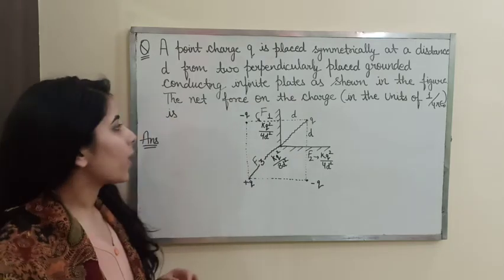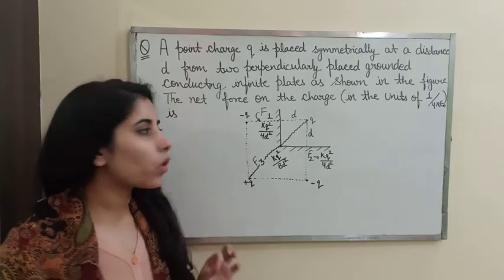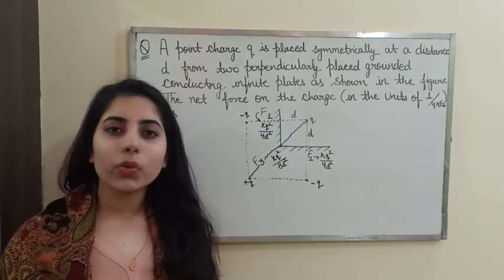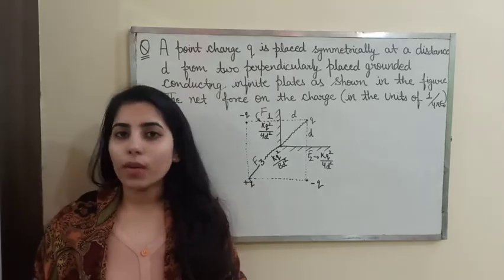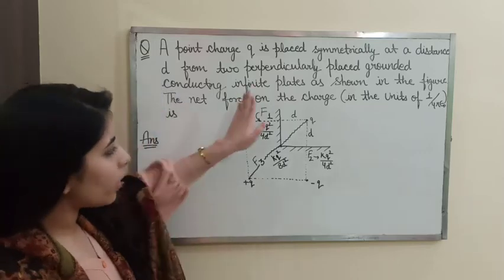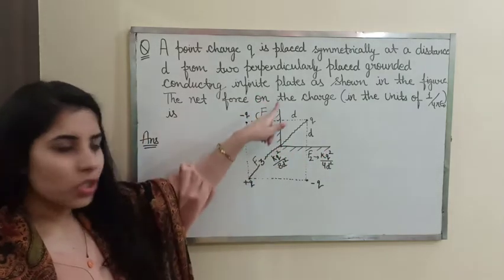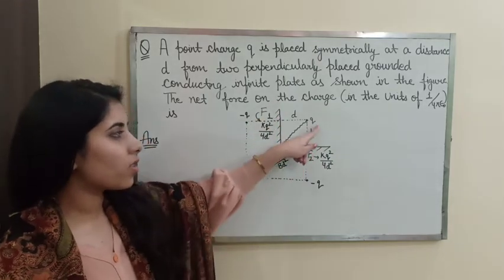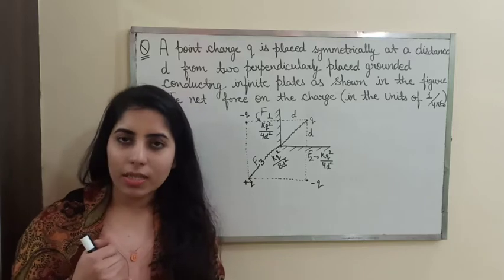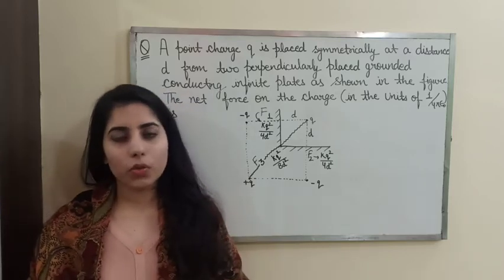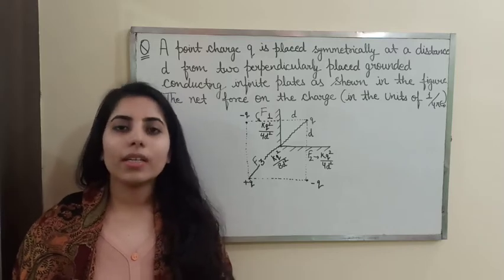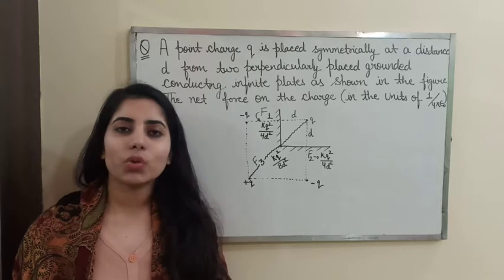The force which will act on this charge will not only be due to the things you can directly observe — it will be due to the image charges. When a question is related to an infinite grounded conducting sheet or plate, we mainly use the image charge method. As per this method, we consider the image charge at an equal distance on the other side of the grounded conducting infinite sheet, and the charge should be opposite — so if the real charge is Q, the image charge is minus Q.